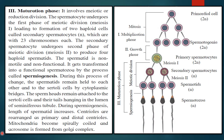Now, what happens in the maturation phase? The primary spermatocytes undergo meiosis I because they are diploid and the sperm has to be haploid. So it undergoes meiosis I and forms secondary spermatocytes. These secondary spermatocytes again undergo meiotic division to form 4 spermatids, which are haploid. These 4 spermatids undergo spermiogenesis and form 4 spermatozoa, which are haploid. So finally you get sperms which are haploid in nature.